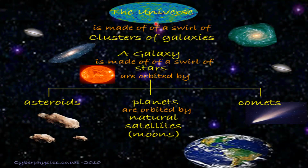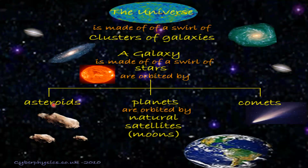The Universe is made up of a swirl of clusters of galaxies. A galaxy is made of a swirl of stars, and these stars are orbited by asteroids, planets, and comets. These planets are orbited by natural satellites. Some planets have natural satellites and some planets like Mercury and Venus do not have moons.